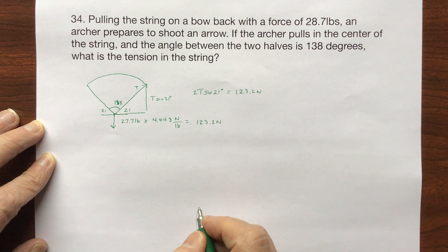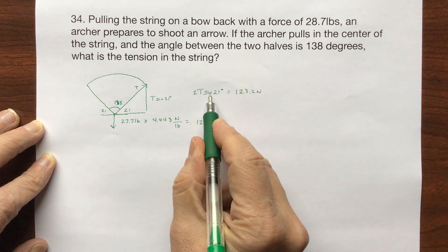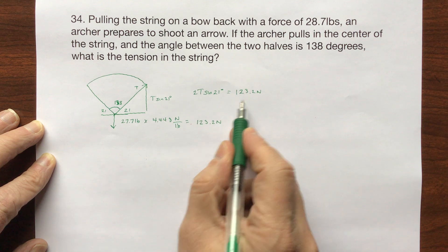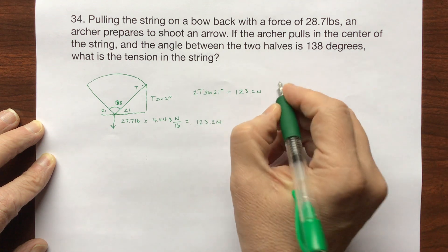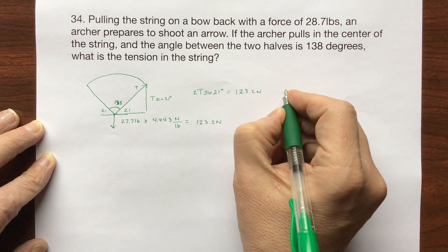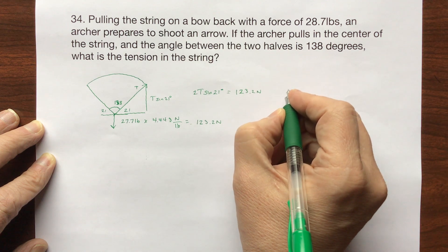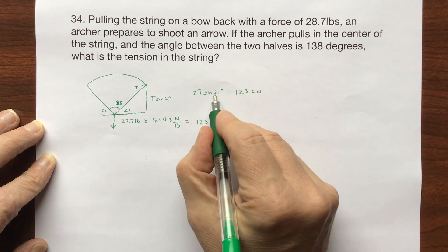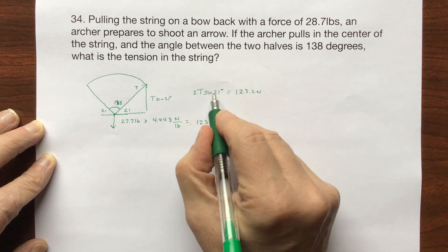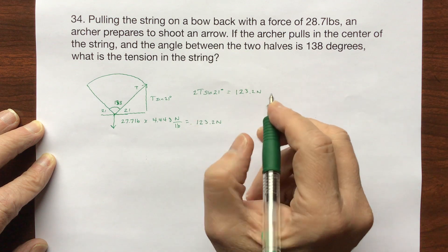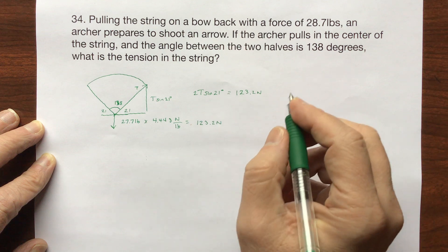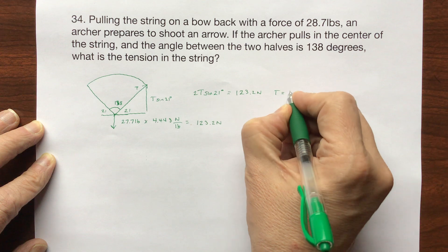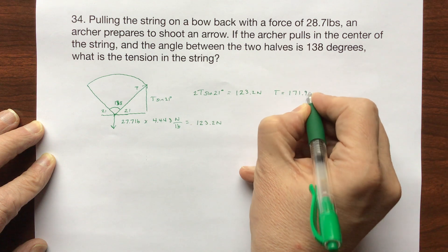Okay, so I'm just going to solve for T. I'm going to divide by 2 times the sine of 21 on the bottom, get T by itself. So that'll end up being—or no, I'm sorry—I'm going to take 2 times sine of 21 and divide it on the bottom. And I end up with T equals 171.9 newtons.